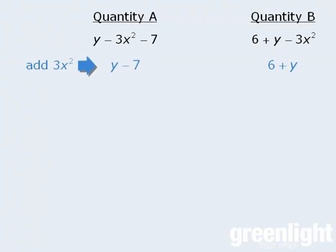From here, if we subtract y from both quantities, we're left with negative 7 in quantity A, and we're left with 6 in quantity B. At this point, when we compare negative 7 and 6, we see that 6 is greater, which means the correct answer is B. Now I should point out that if any of the algebra here confuses you, do not worry. We'll cover all of the necessary algebraic concepts in a future module. At the moment, just familiarize yourself with the technique of performing the same operation on both quantities.